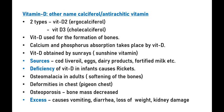Sources of Vitamin D include cod liver oil, eggs, dairy products, and fortified milk. Deficiency of Vitamin D in infants causes rickets — a condition where bones become very weak and soft. In adults it causes osteomalacia — softening of bones. It can also cause deformities in the chest, known as pigeon chest.